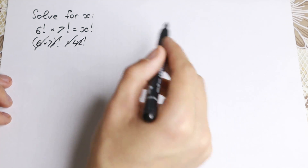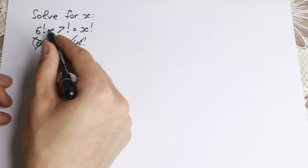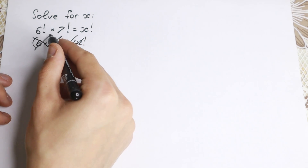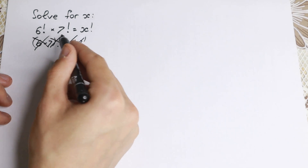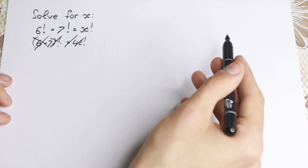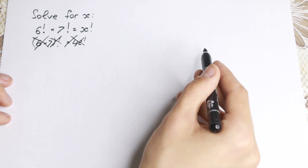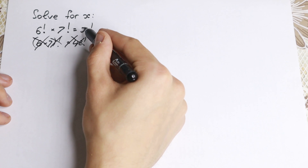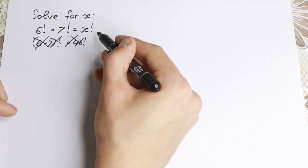So how can we solve it? How can we find x? Because 6 factorial is a huge number, 7 factorial is a huge number, and when we multiply them we get a really huge number. We need to find what x is.